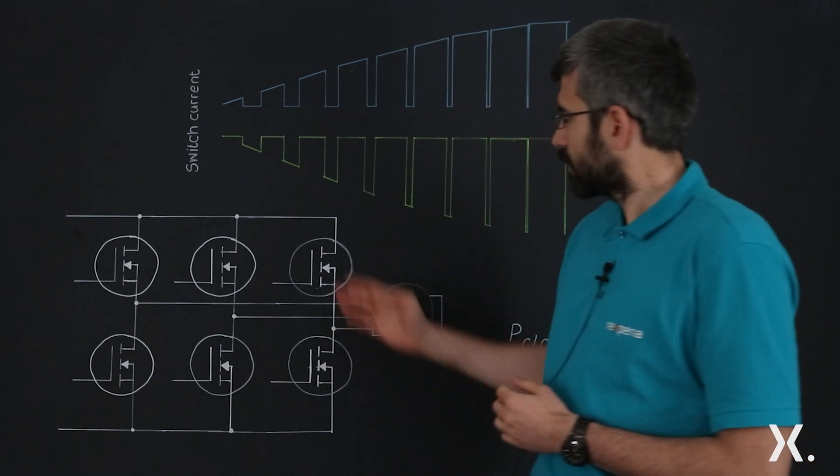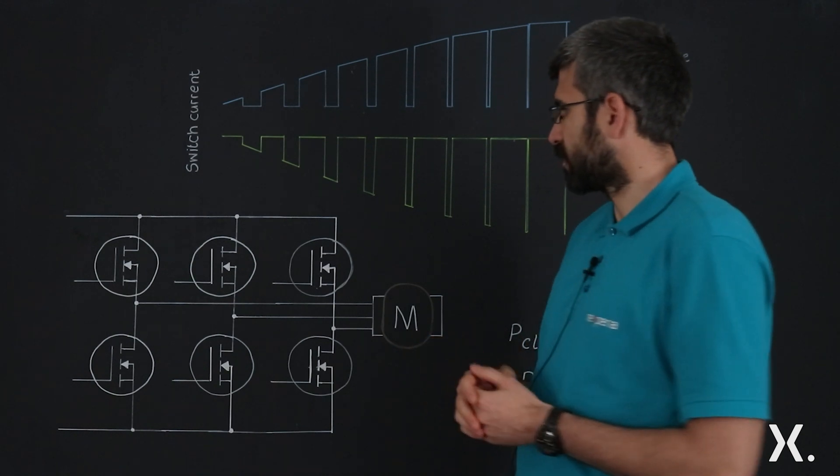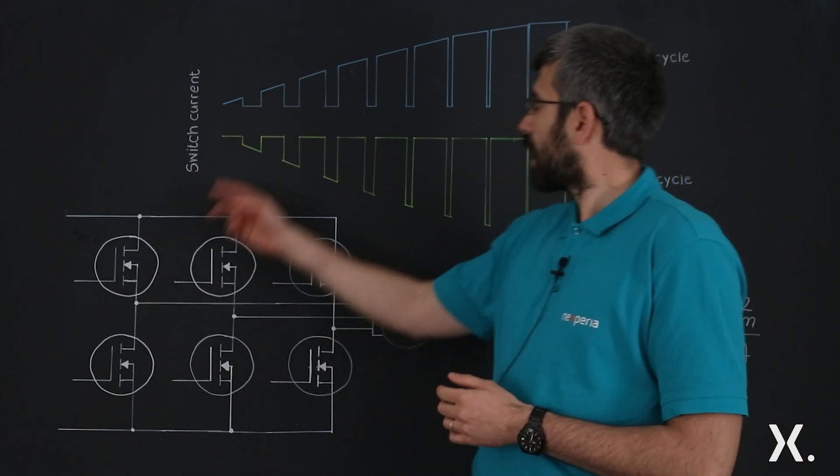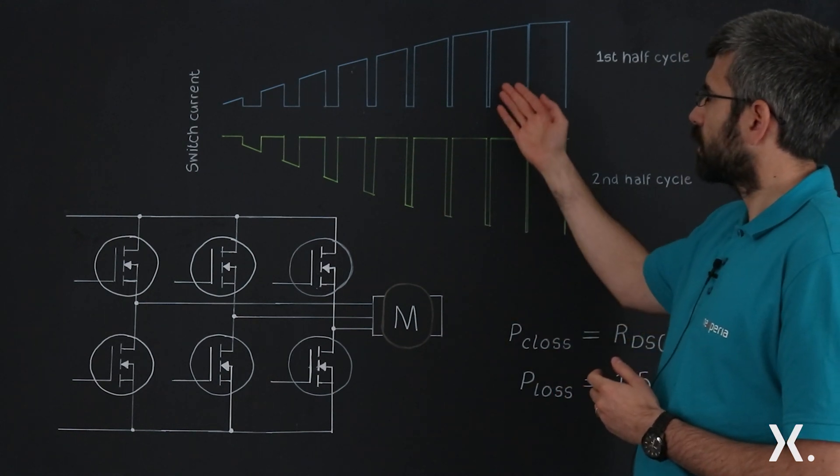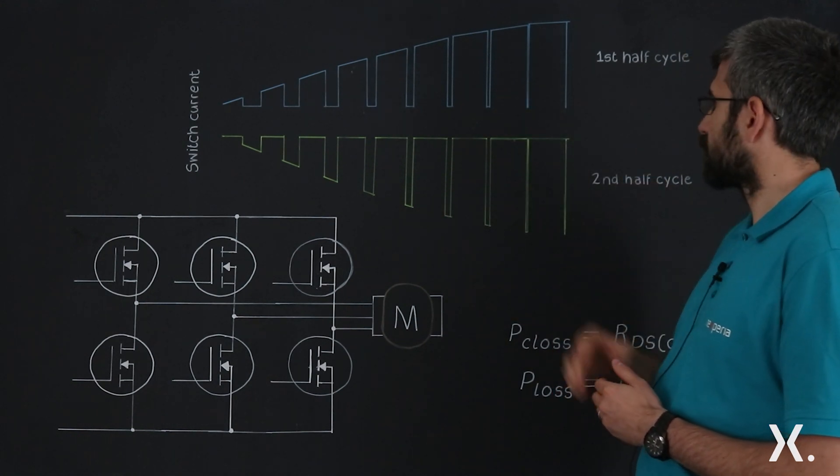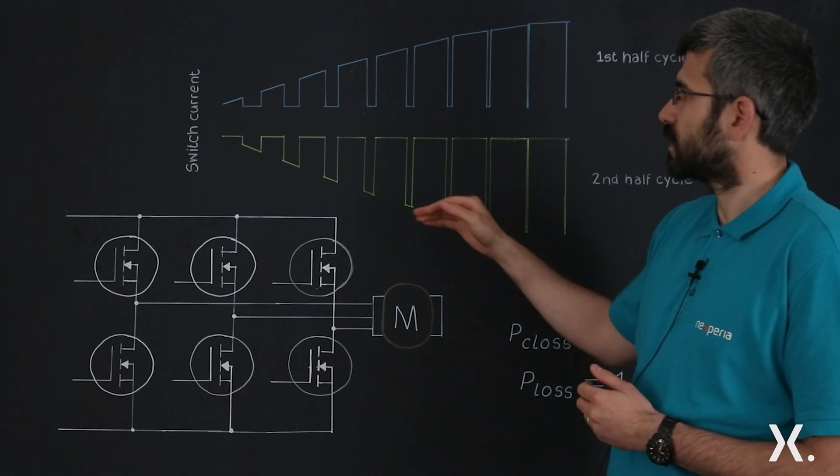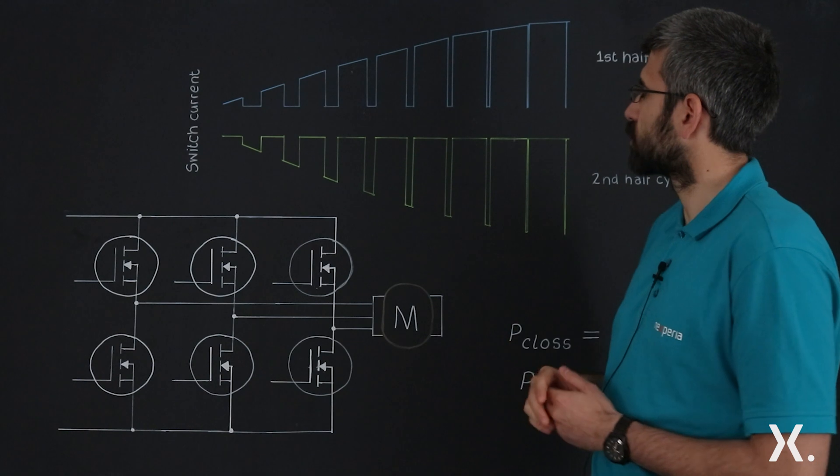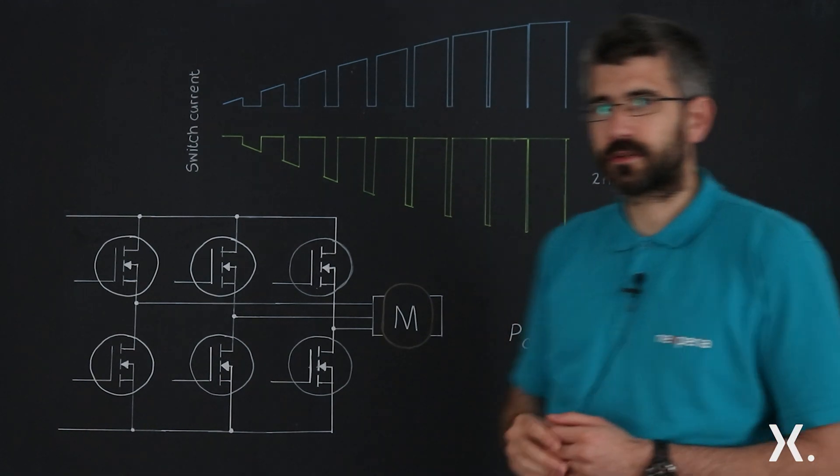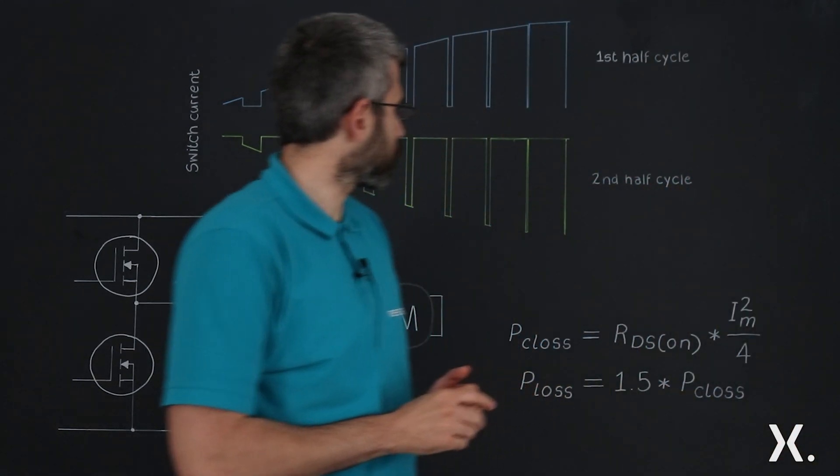If we look at a drive structure of a permanent magnet synchronous machine, each MOSFET has a current waveform that is shown here. They are complementary in the first and second half cycles. This means that by adding them together, we get half of the sinusoidal waveform in the period of a complete sinusoidal waveform.